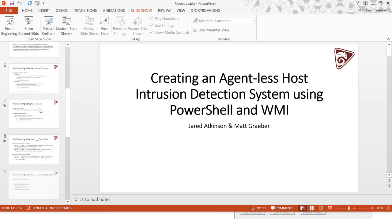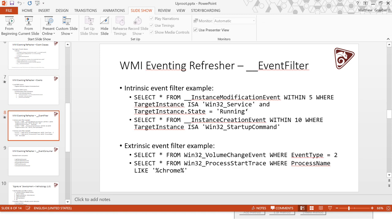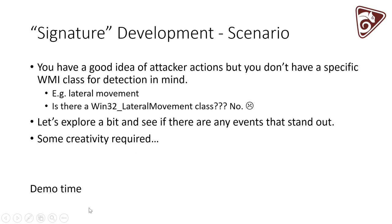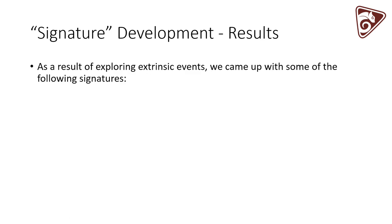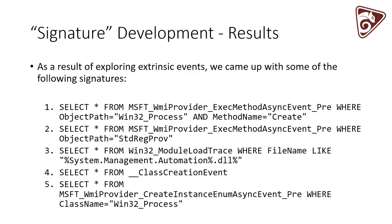Lateral movement is: if you're an attacker and you've phished somebody to get access to their system, you want to start spreading throughout the network to enumerate it and figure out where a domain admin is logged in to steal their credentials. To get access to their system, you need some way to execute code on it — that process is called lateral movement.